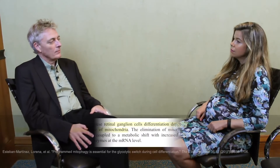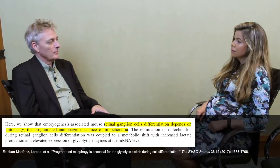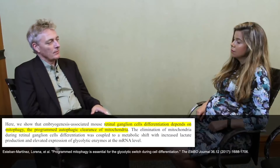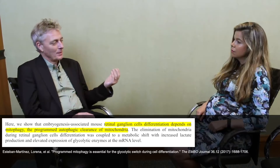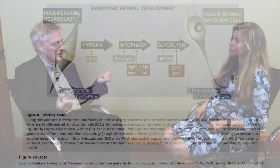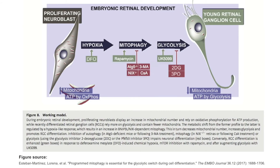You have similar examples in the embryonic development of the retina for retinal ganglion cells, or the differentiation of macrophages from M0 to M1, in which cells change from oxidative phosphorylation and respiration to an essentially glycolytic metabolism coupled to mitophagy. Inhibition of mitophagy actually blocks the differentiation process in both examples. So these processes are not just a stress response — they're part of development and can be used in multiple different instances.